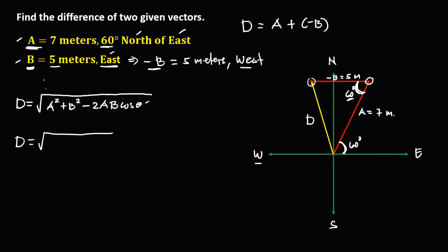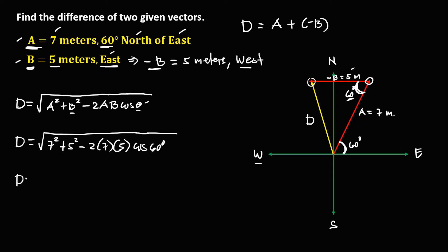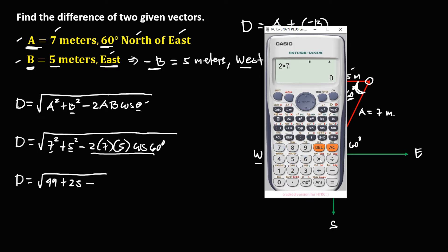To solve for the difference, we have D equals the square root of A squared — A is 7, so 7 squared — plus B squared — B is 5, so 5 squared — then minus 2 times A times B times cosine theta. A is 7, B is 5, and theta is 60 degrees.